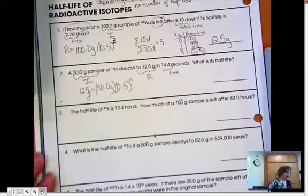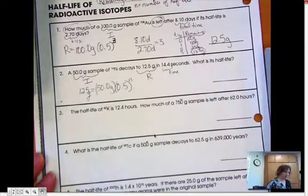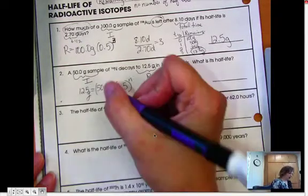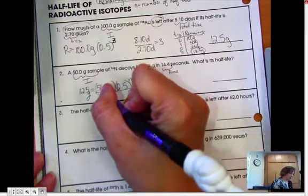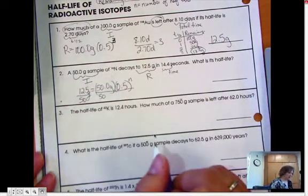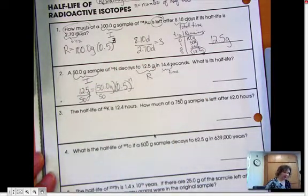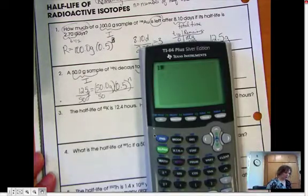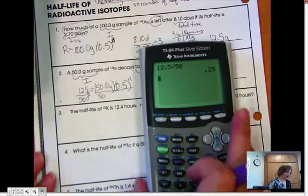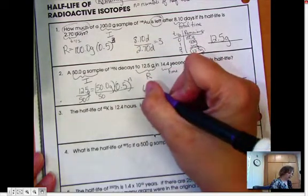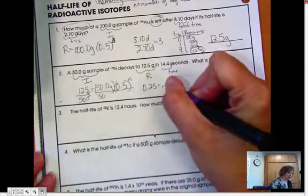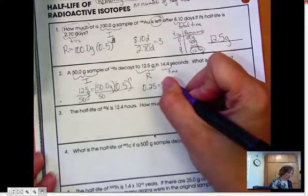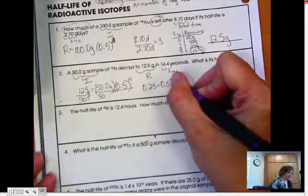So 12.5 grams is remaining, which equals 50 grams times 0.5 raised to the power of n. I can simplify that a little bit. I can divide both sides by 50. So 12.5 divided by 50 is 0.25.